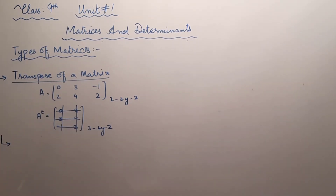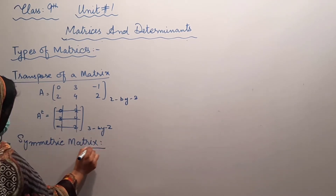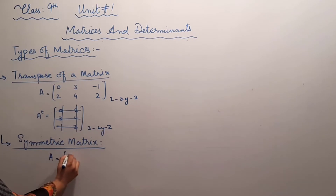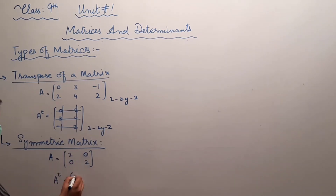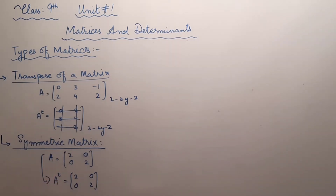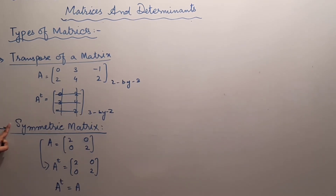Now students, what do you mean by the symmetric matrix? If matrix A is equal to 2, 0, 0, 2, and we take the transpose of that matrix — writing the first row into the first column and the second row into the second column — we get A transpose as 2, 0, 0, 2. Compare the corresponding entries: 2, 0, 0, 2. After taking the transpose we get the same matrix again: 2, 0, 0, 2. If A transpose is equal to A, these matrices are known as symmetric matrices.